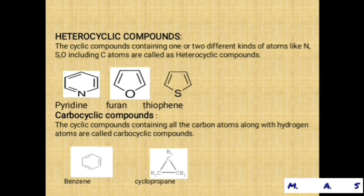Pyridine is a 6-membered ring. Starting from nitrogen, you can number clockwise or anti-clockwise: 1, 2, 3, 4, 5, 6. Furan is a 5-membered ring, and thiophene is also a 5-membered ring.